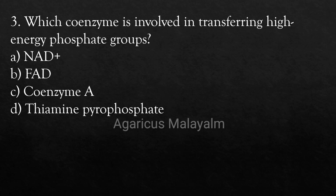Third Question: Which coenzyme is involved in transferring high-energy phosphate groups? Option A: NAD+. Option B: FAD. Option C: Coenzyme A. Option D: Thiamine Pyrophosphate. Correct Answer: Option C — Coenzyme A.